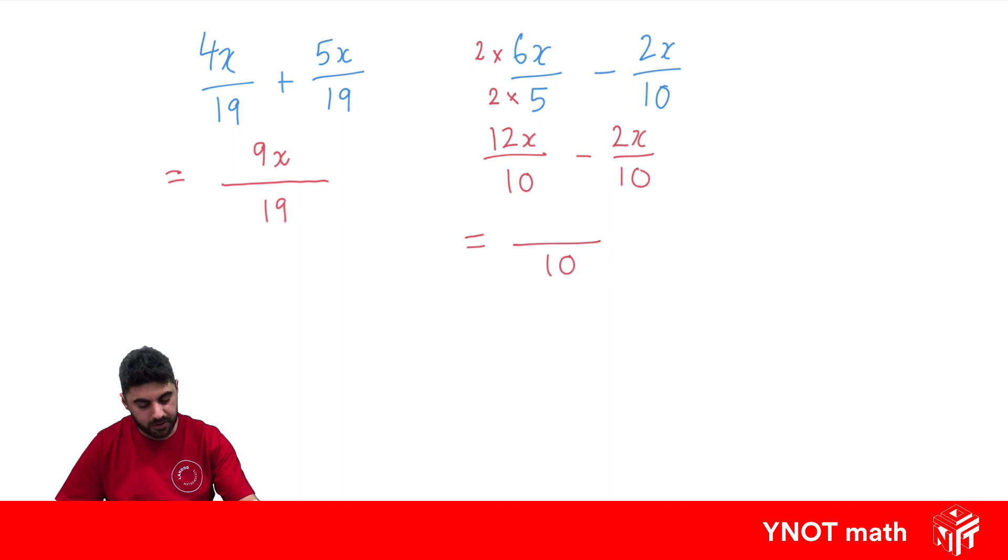Now the denominators are the same. So we can keep the denominator the same and just subtract the numerators. 12x minus 2x gives us 10x. Now 10 divided by 10 is going to simplify to 1. So we're left with 1x, but we're just going to write x.